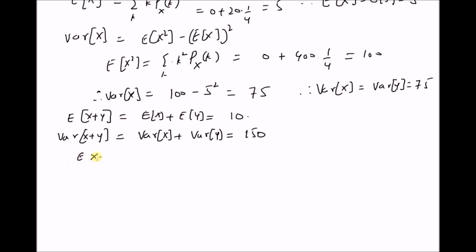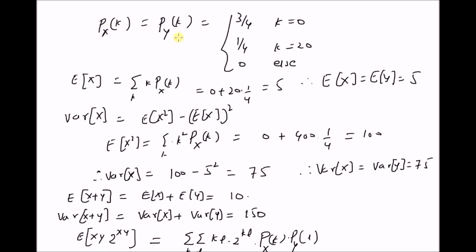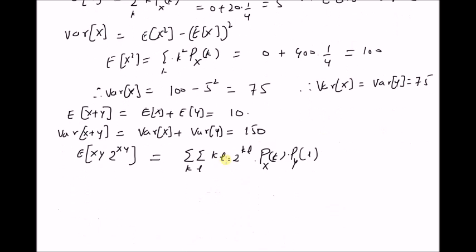Next, we want to find the expectation of an interesting function, that is the product of X and Y times 2 to the power XY. This equals the summation over all values k and l (where l corresponds to the random variable Y) of the product k times l times 2 to the power kl, multiplied by the joint probability, which is the product Px of k times Py of l. From the definition of the PMF, for values k equal to 0 or l equal to 0, this product is 0. The only non-zero value is for k equal to 20 and l equal to 20. So we have 20 times 20, that is 400, multiplied by 2 to the power 400, multiplied by the probabilities Px(20) and Py(20), that is 1/4 times 1/4, giving 25 times 2 to the power 400.